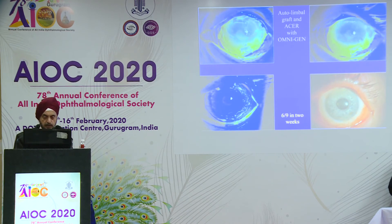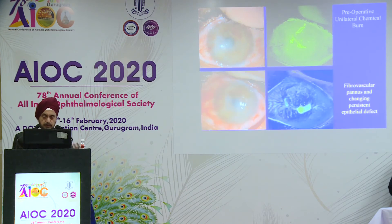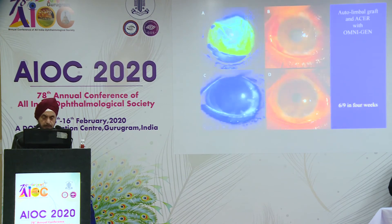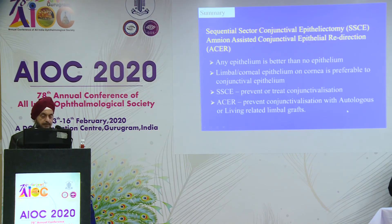This final case: pre-op shows lots of non-healing epithelial defect from a chemical burn. We did ACER — this is with the outer membranes still on. When the outer membrane is taken off, you can see the patient achieves 6/9 vision in four weeks, and that's how this patient looks.